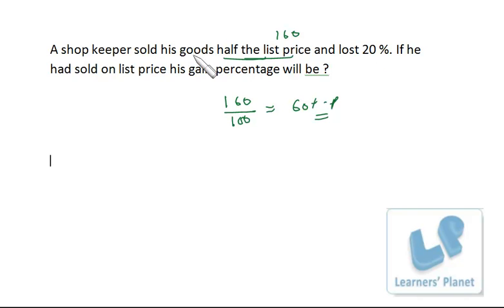But he is telling the shopkeeper sold his goods half the list price. That means if the selling price is 80 rupees, the list price should be 160 rupees.